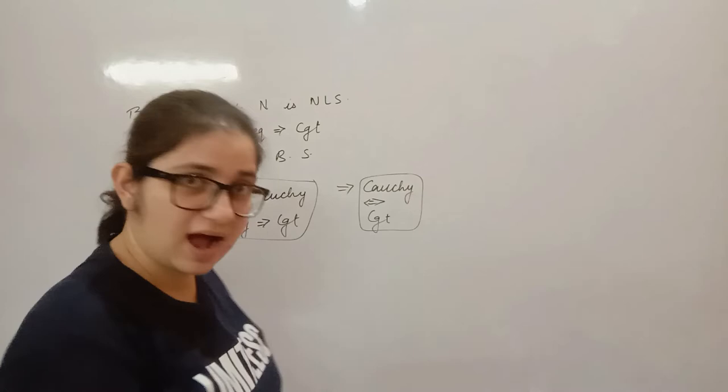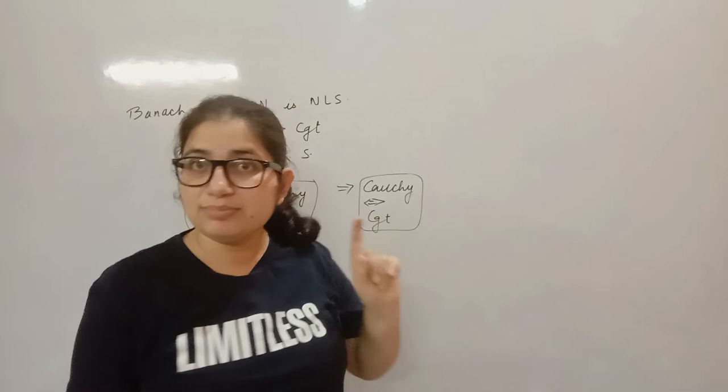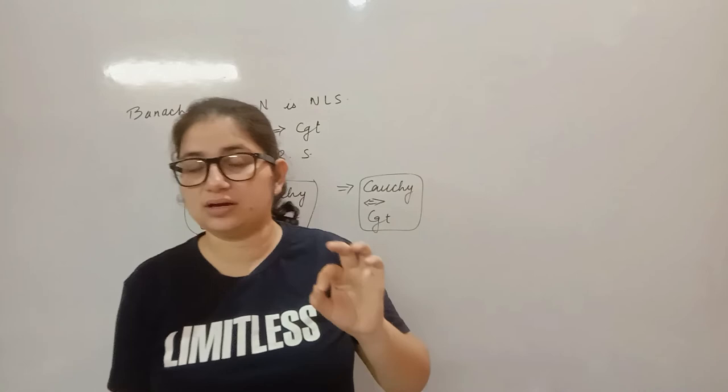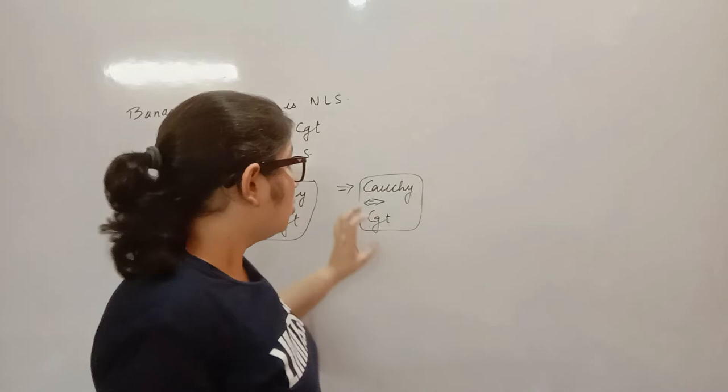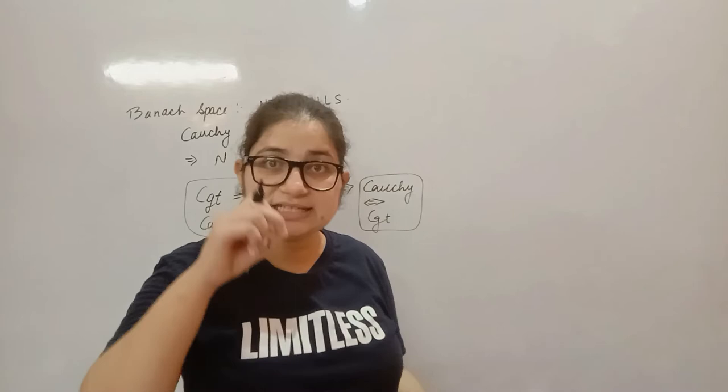After you show the Banach space, you will have a direct result for the normed linear space: every convergent sequence is a Cauchy sequence. But the converse does not hold. There was a condition — if we keep that condition, then the converse will hold. When we prove them, you will understand that it holds in some spaces and not in others.